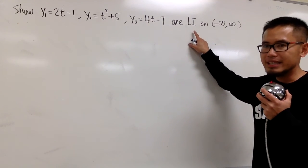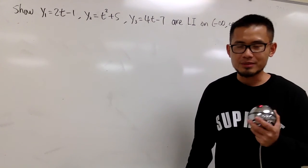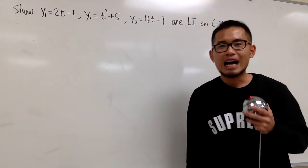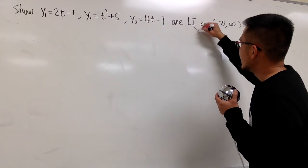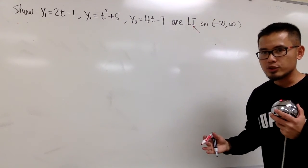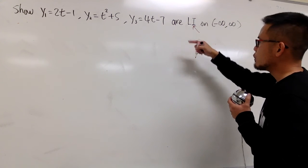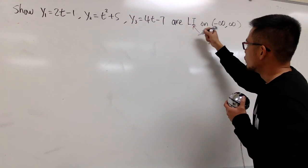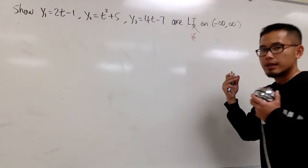So to show linear independency for three functions, you can just use the Wronskian, but first of all, let me demonstrate how you can still use the definition. So, to show li in this case, if you want to use a definition, this is what we're going to do. We're going to show that, begin with saying, start off with if, let me just put this down in red.